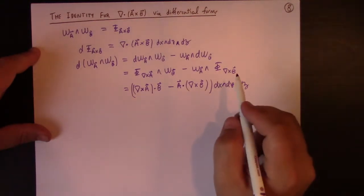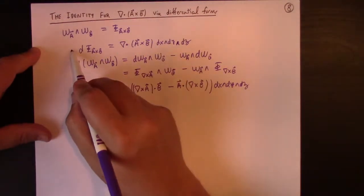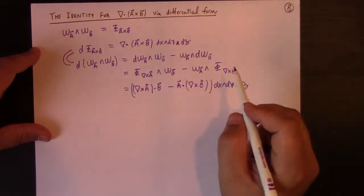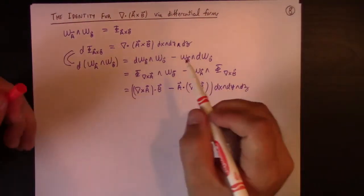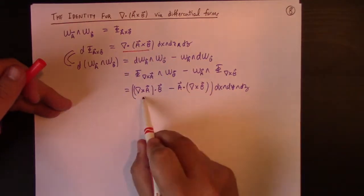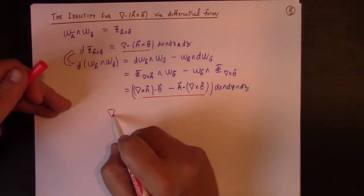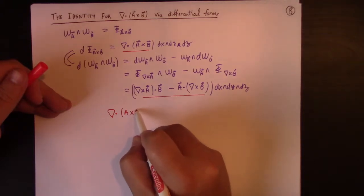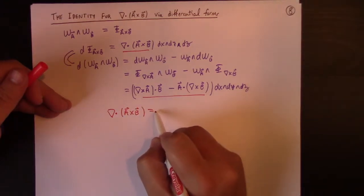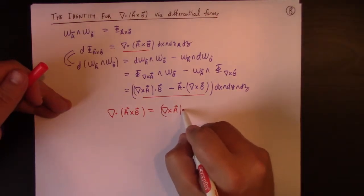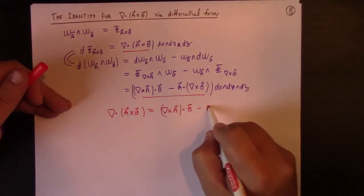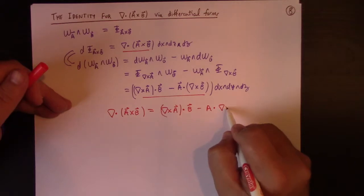So, this is the difference. But of course, these two things are equal, and so you can equate the coefficient of the top form here to the top form there, and voila! The divergence of the cross product of two vector fields A and B is simply the difference of the curl of A dotted with B minus A dotted with the curl of B.